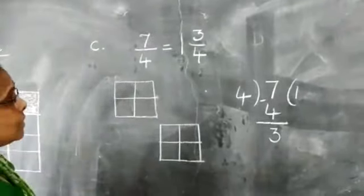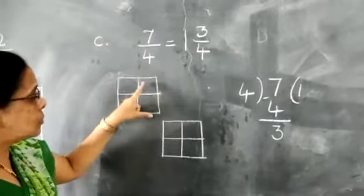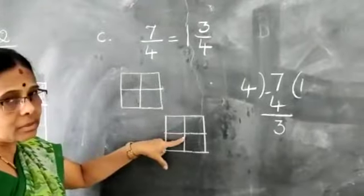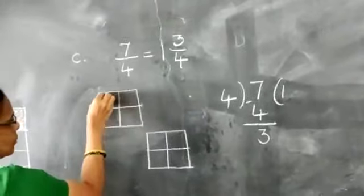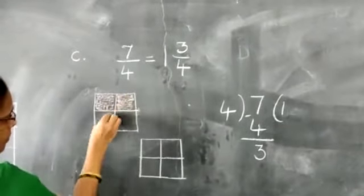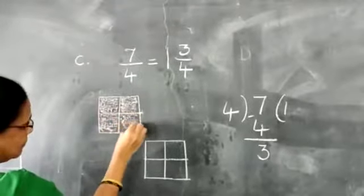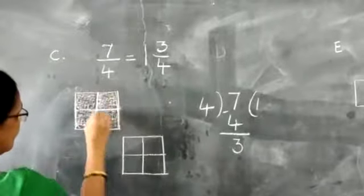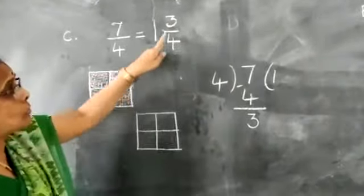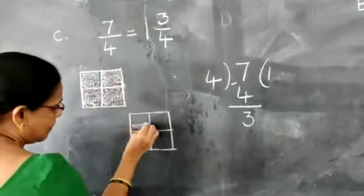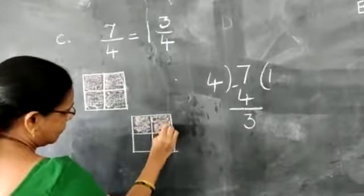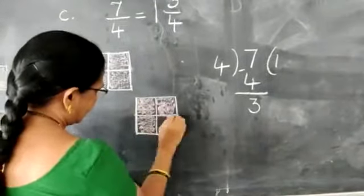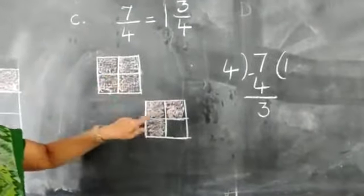So this is 1 whole and 3/4. 1 whole means all 4 boxes fully shaded. And 3/4 means 3 boxes shaded out of 4. So the figure shows 1 whole and 3/4.